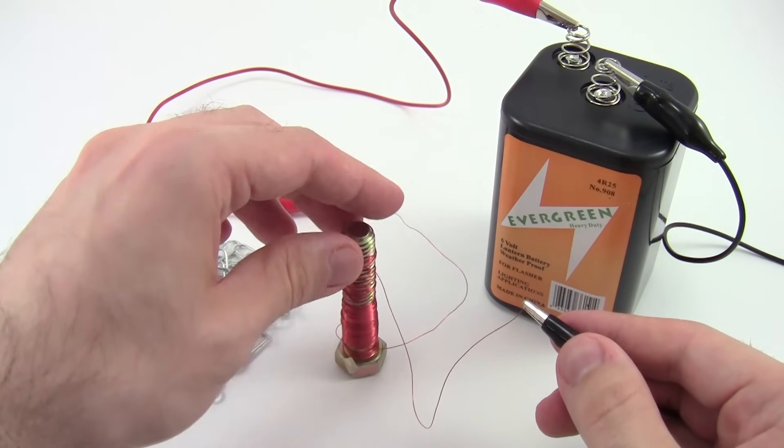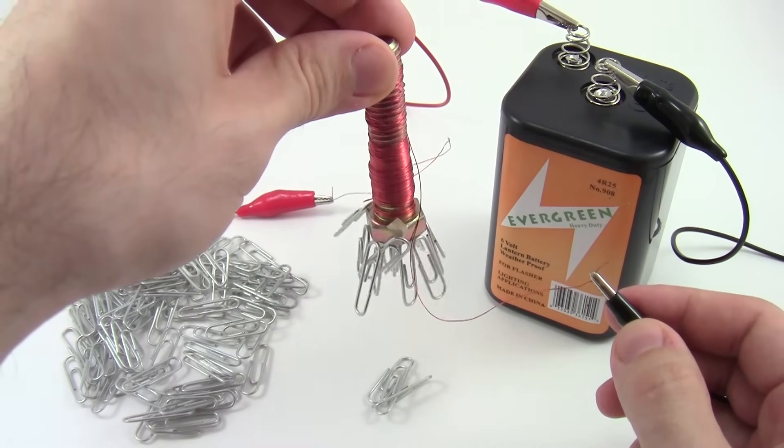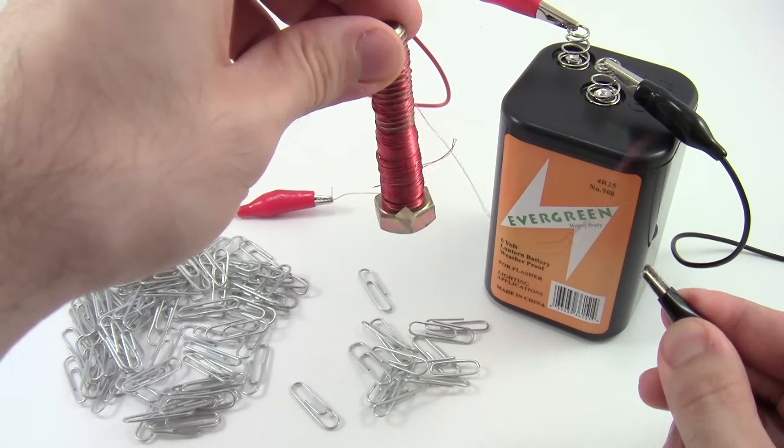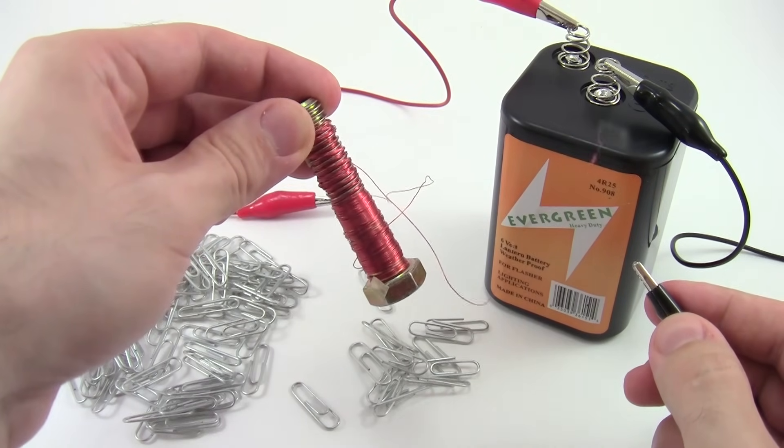When electrical current flows through the electromagnet it generates a magnetic field and you should be able to lift paper clips. To turn off the magnetic field, simply disconnect one of the alligator clips. Always make sure you disconnect your magnet when not in use to prevent it from overheating.